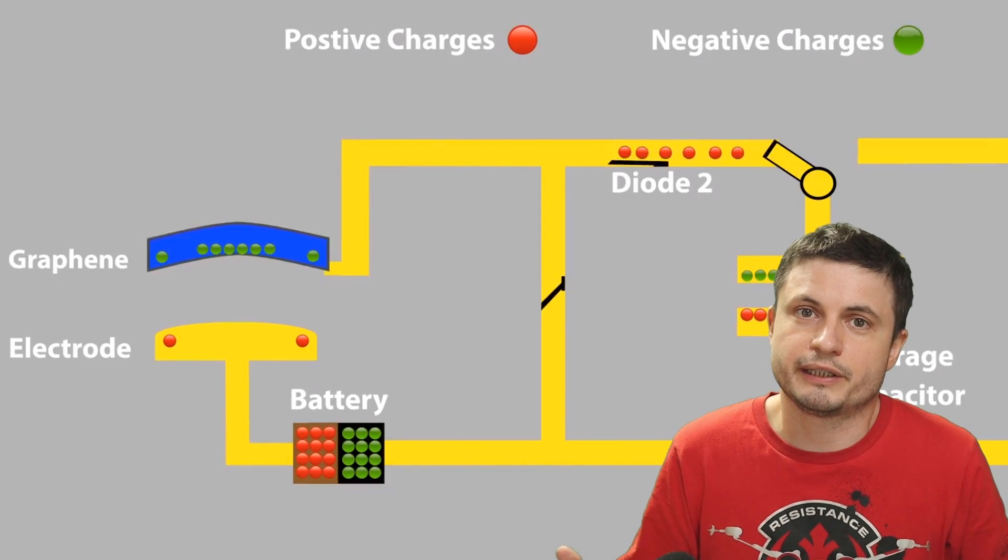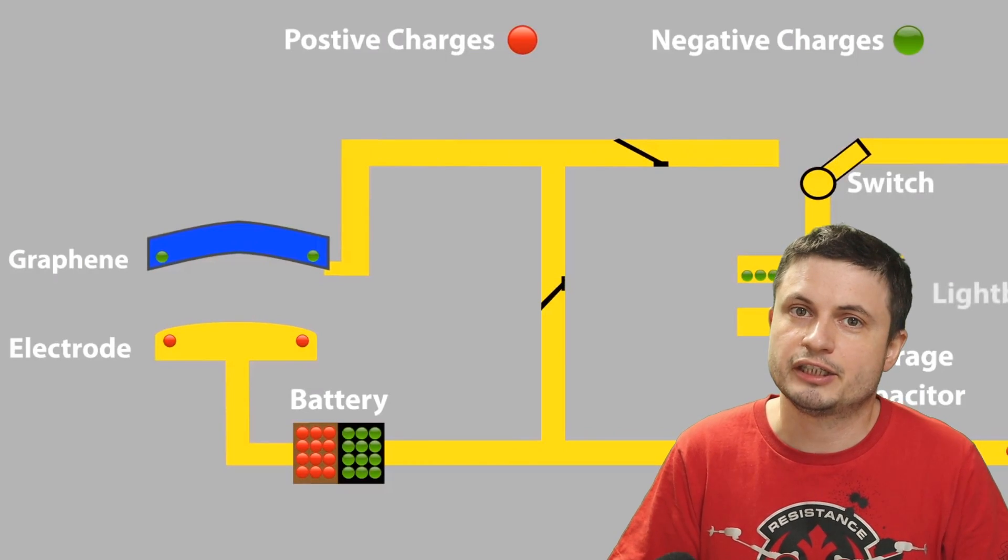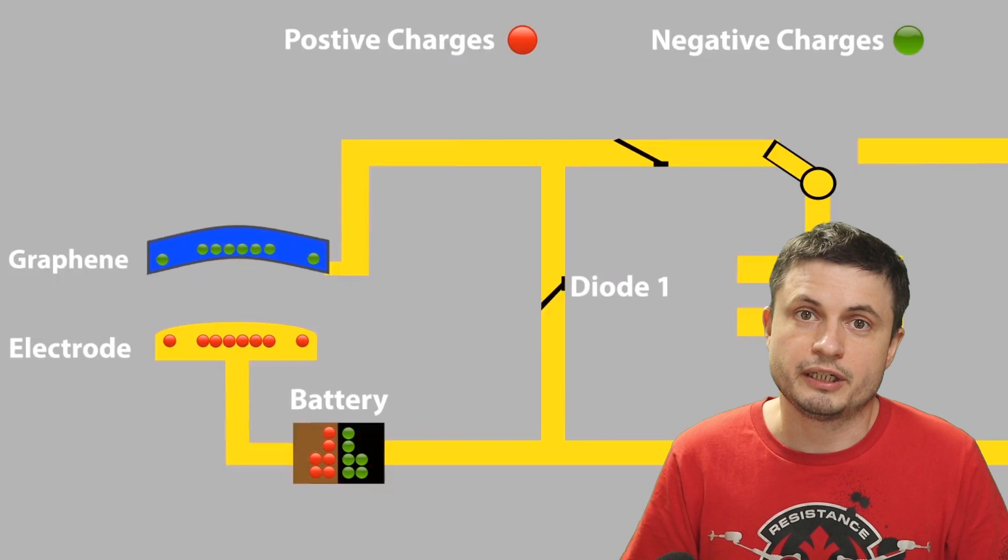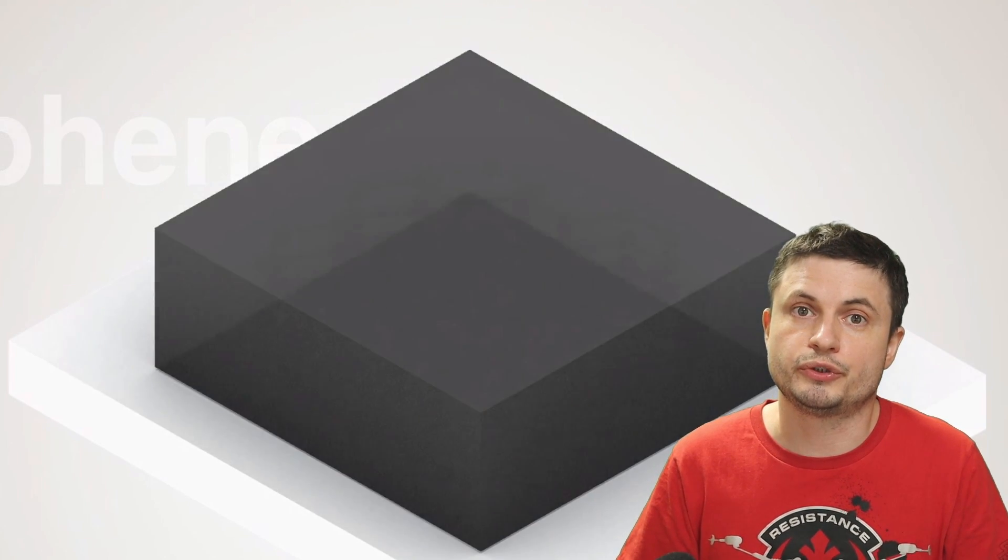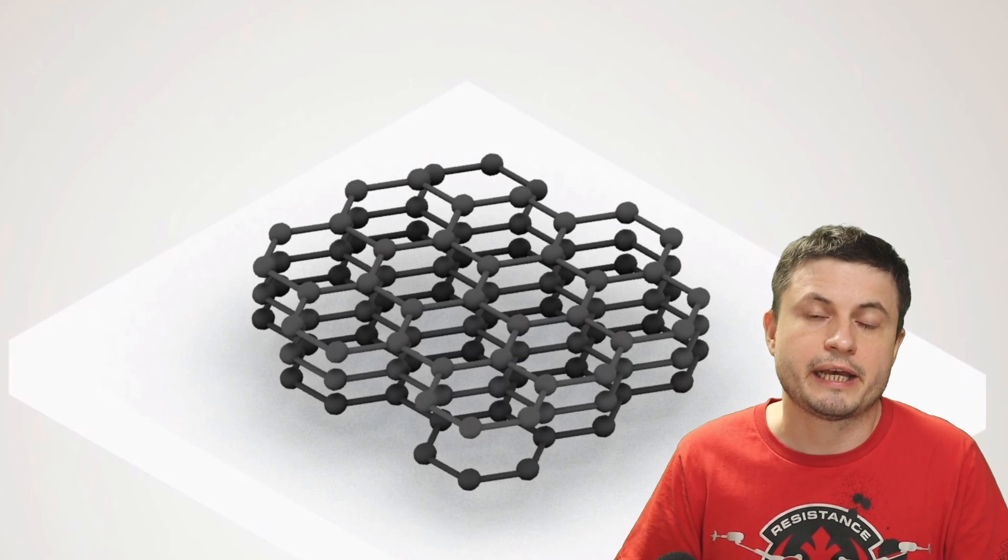Which is kind of ironic because right now the biggest issue with a lot of electrical production is the excess of carbon that's produced and released into the atmosphere. So it's very possible that this is actually the solution we've been looking for, finding a way to turn carbon back into graphene and then start creating energy that way.